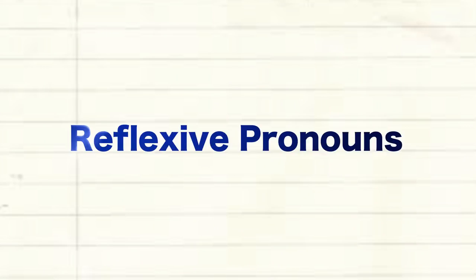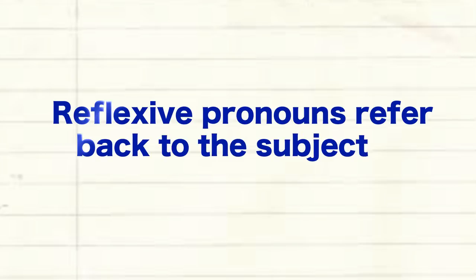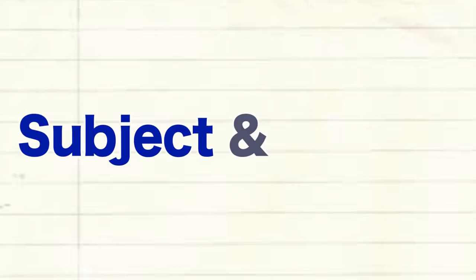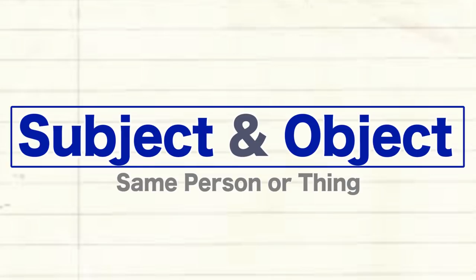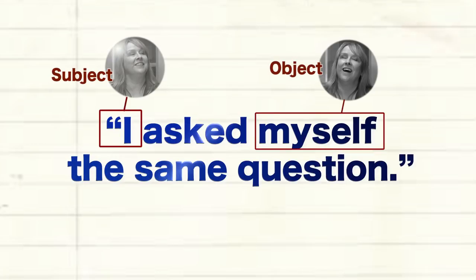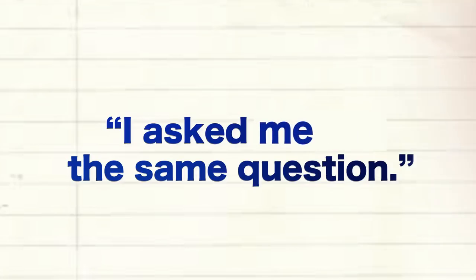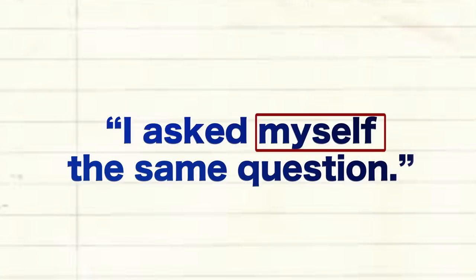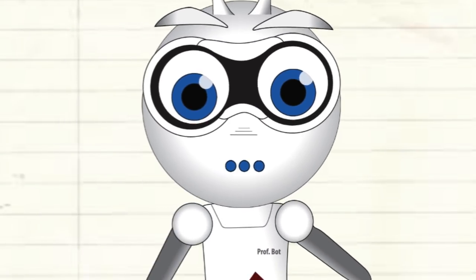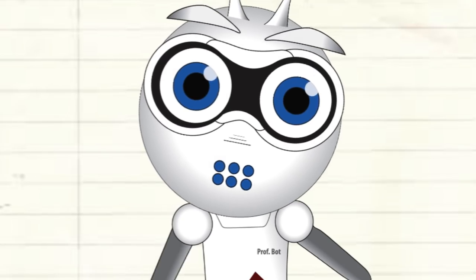This lesson teaches reflexive pronouns. Reflexive pronouns refer back to the subject of a sentence or clause. We use them when the subject and the object are the same person or thing. For example, Miss Weaver says, 'I asked myself the same question.' 'I' is the subject and 'myself' refers back to it. Here, she would not use the pronoun 'me.' You need to use the reflexive pronoun 'myself.' Reflexive pronouns are easy to find. They end in 'self' or 'selves.' Listen for them.